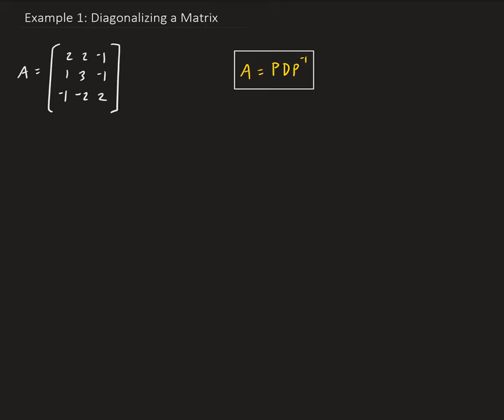In this example, we're going to diagonalize the following matrix. Diagonalization is a way to factor a matrix. We want to construct A in terms of P, D, and P inverse. The matrix P will have the eigenvectors as its columns, and D is the diagonal matrix where the entries along the main diagonal are the eigenvalues. Then we have P inverse.